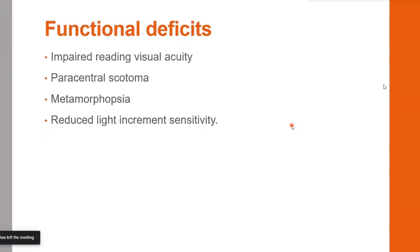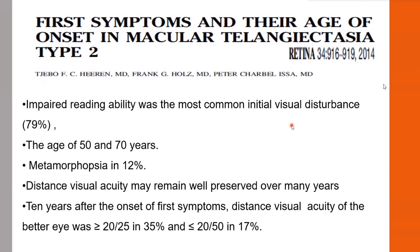Patients with MacTel present with impaired reading ability, paracentral scotoma, metamorphopsia, and reduced light increment sensitivity. A study by Jebo et al. found that impaired reading ability was the most common visual disturbance in about 80% of patients, with age of presentation between 50 and 70 years, and metamorphopsia in 12% of patients. Distance visual acuity remained well preserved over many years; over 10 years after first symptom onset, distance visual acuity in the better eye remained better than 20/25 in 35% of patients and was worse than 20/50 in only 17%.